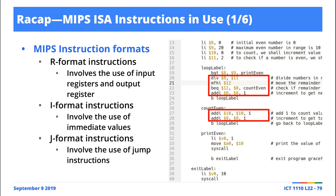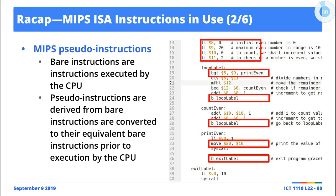We also discussed jump and link (J-format), and we discussed this whole notion of so-called pseudo instructions — effectively instructions that cannot be executed by the CPU, or rather instructions that have to be converted